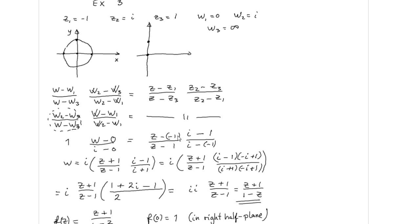And we also insert the z points. z1 is minus 1, we have z2 here is i, and z3 is 1.